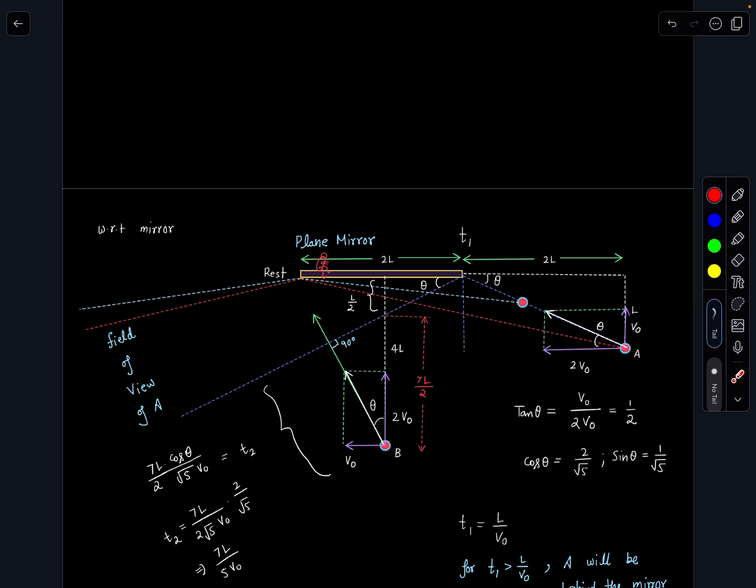Now if I say this angle is theta, so this angle will become theta, and from the laws of reflection I can say even this angle is going to be theta. So if this distance is L and tan theta from here is 1 by 2, so if it is L this will become L by 2 and the remaining distance will become 4L minus L by 2, which is 7L by 2. I wrote it as 3L by 2 yesterday, which is why I removed that video.